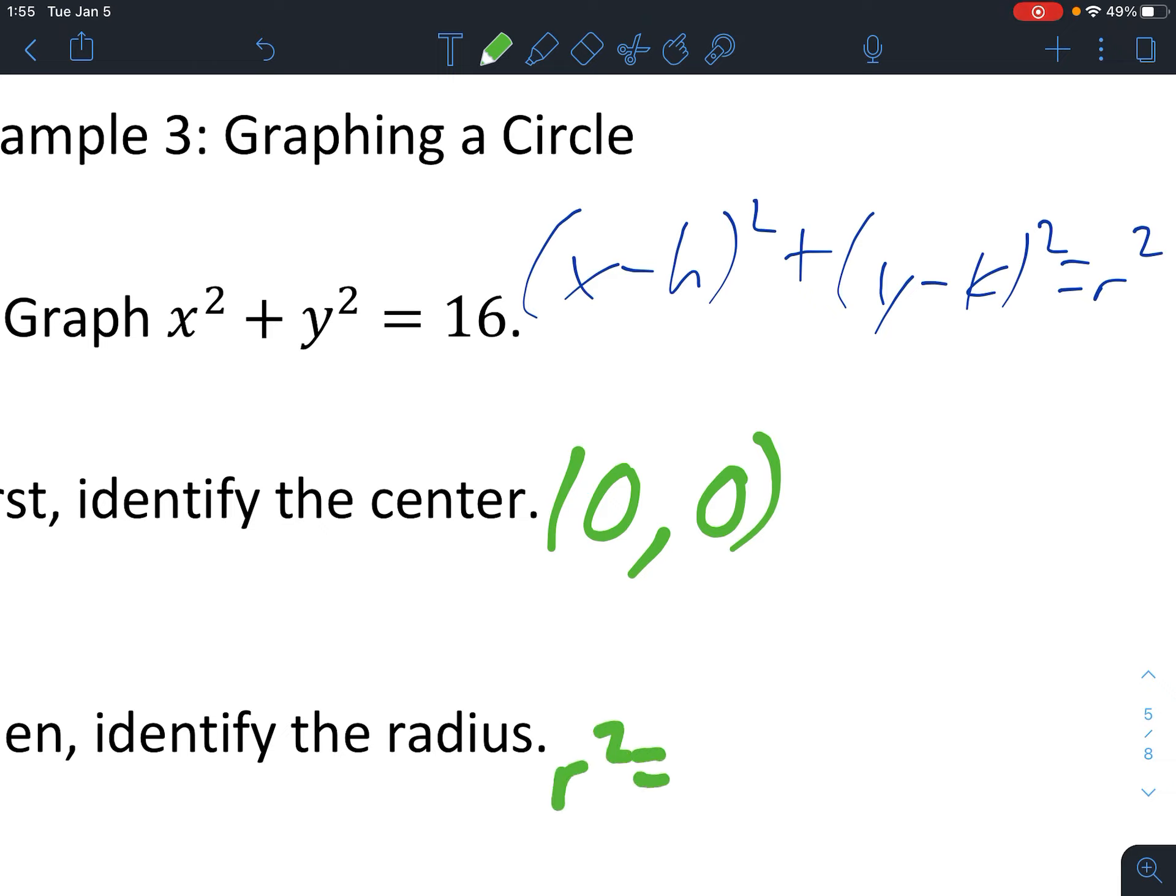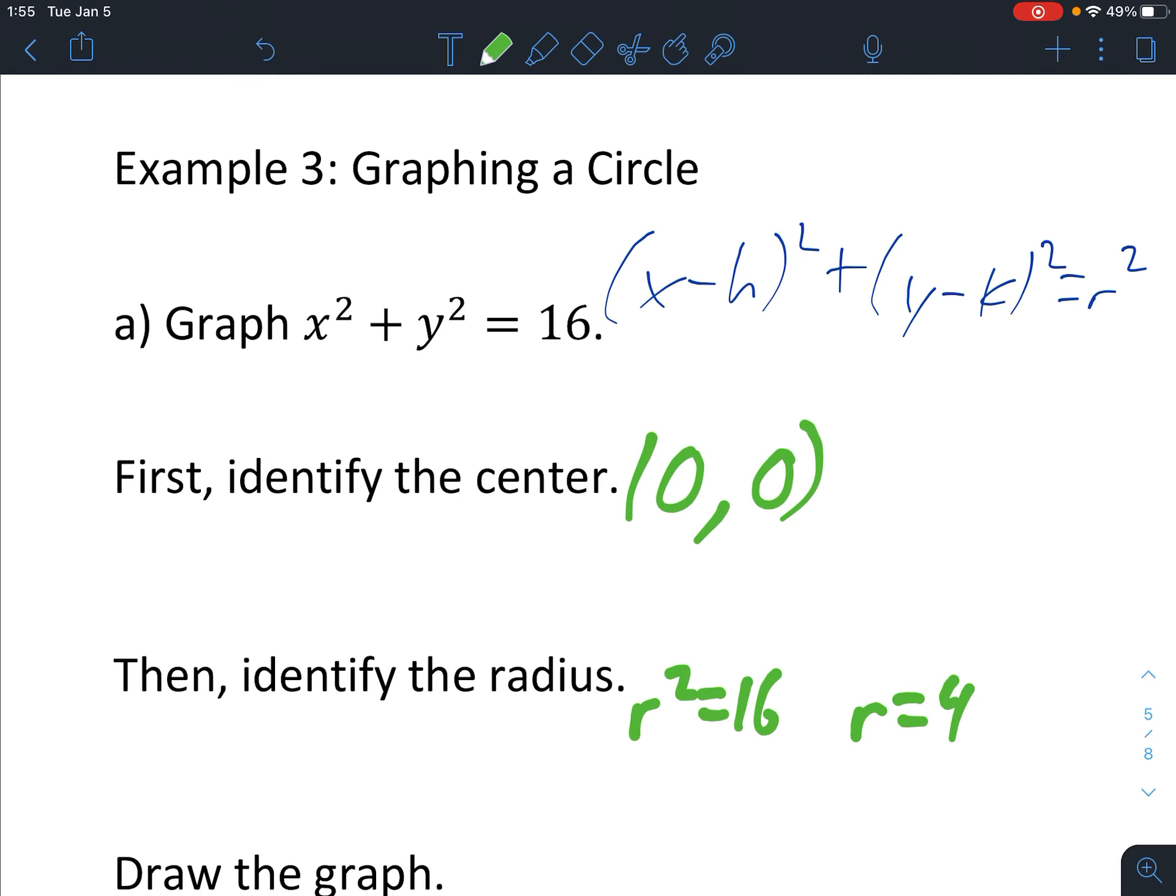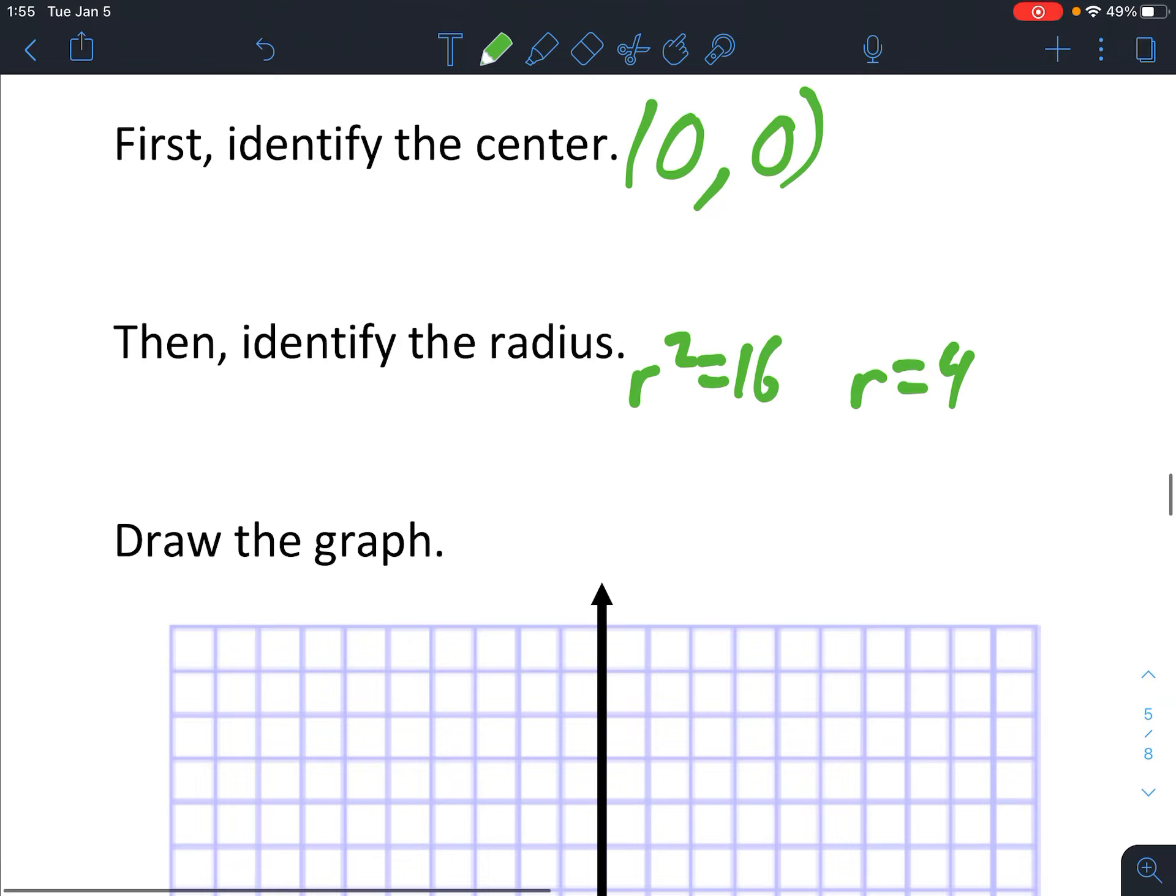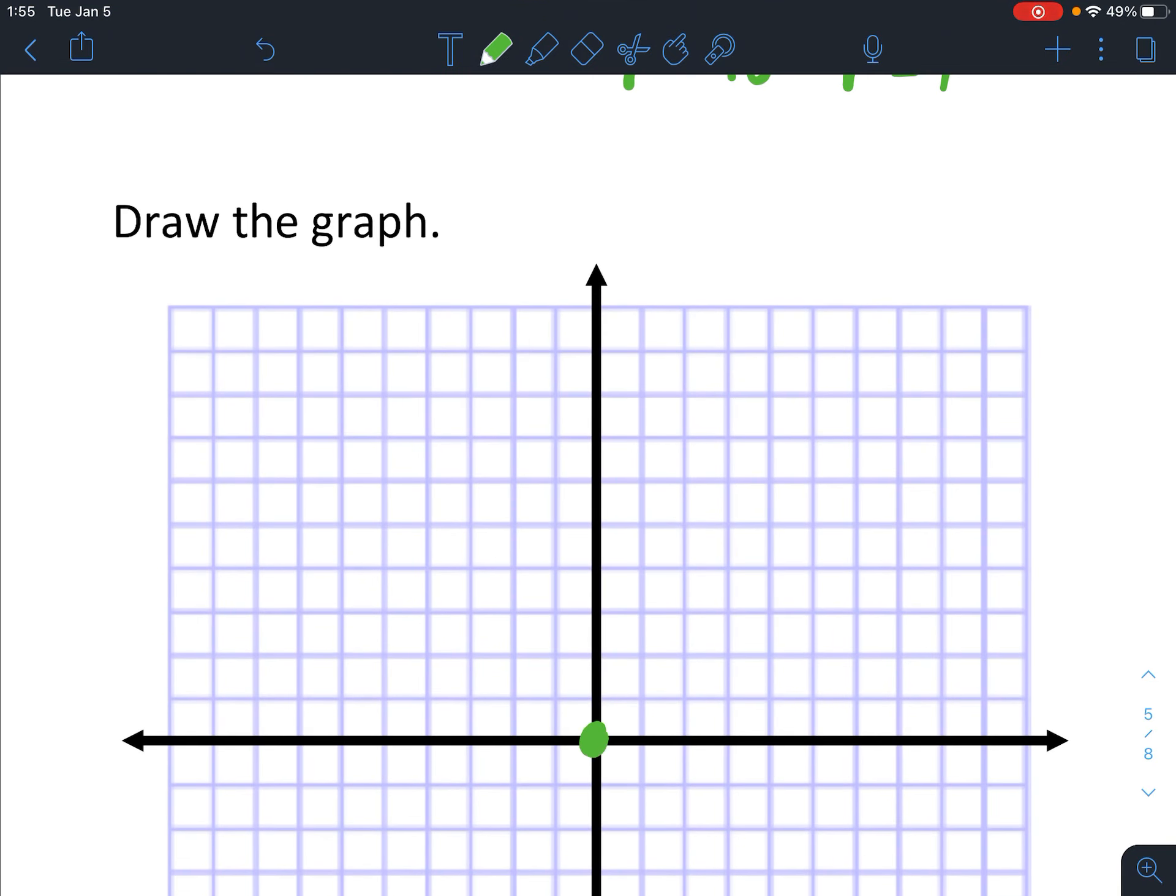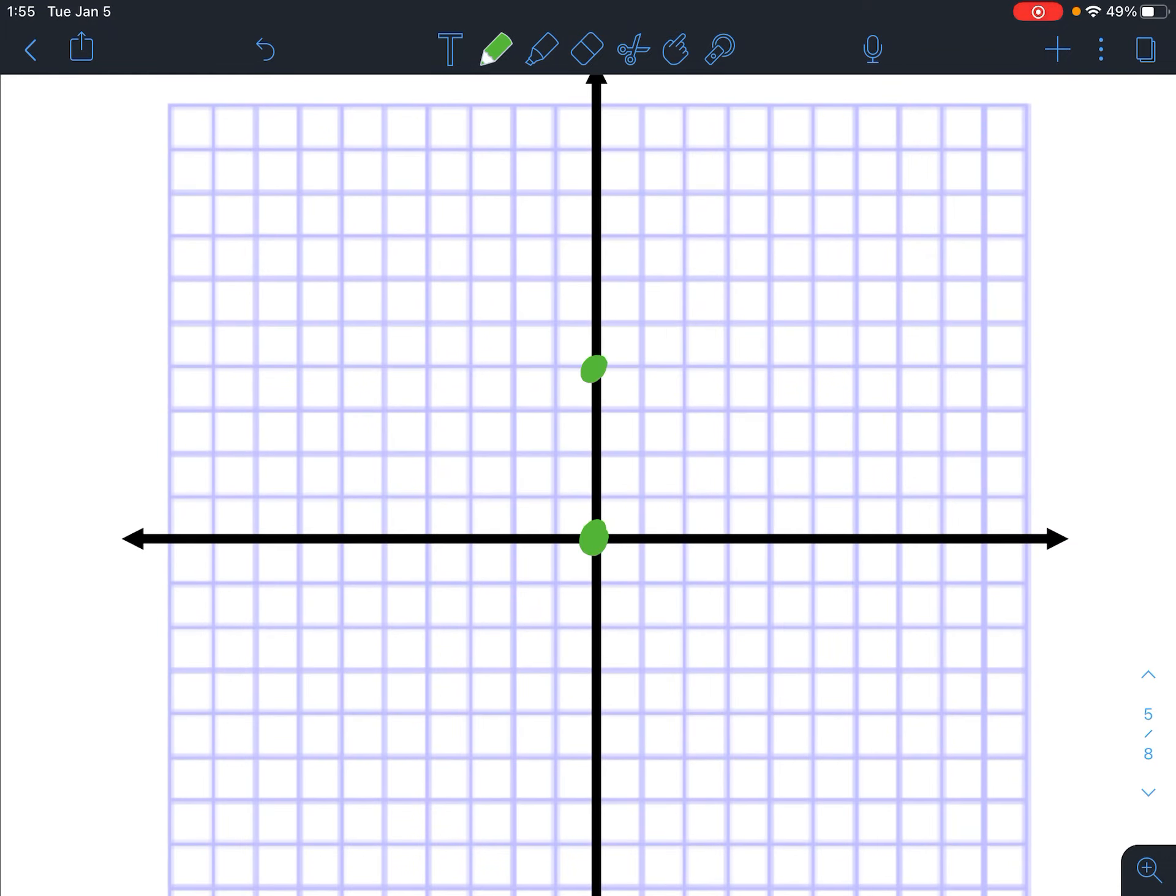So let me just draw a circle. So how do we do that? Plot the center at 0, 0. And then go 4 up, 4 right, 4 down, and 4 left. And connect the dots. Now try to make it look like a circle. Nice thing about notability is it'll do it for you. So there's your circle.